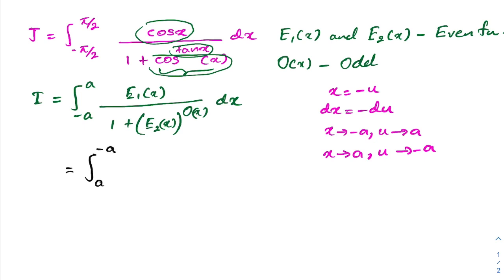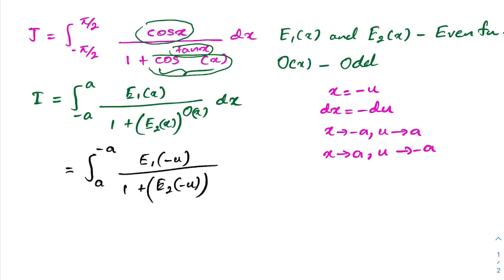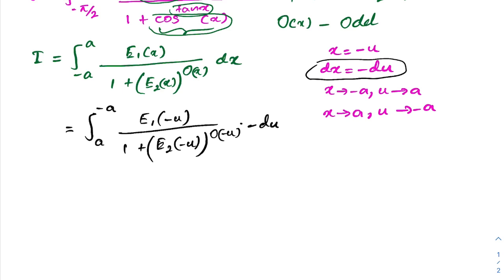Plugging into our integral, the limits become a to -a. Note that e1 and e2 are even functions — I introduced these as even functions, not special functions. So we get e1(-u) over 1 plus e2(-u) raised to the o(-u), times -du.